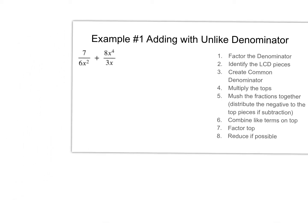Let's take a look at our first example — a nice easy one. We start by factoring the denominator if we can. As we saw in the last video, this is a monomial and this is a monomial, so I can't really factor that because there's no plus or minus to indicate possible factoring. Step one is done. Now identify the LCD pieces — when dealing with monomials, we treat these as individual pieces.